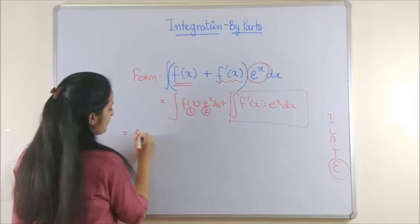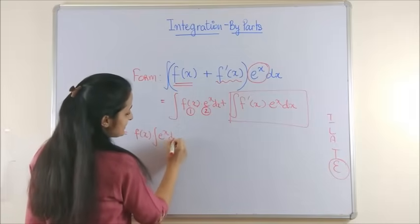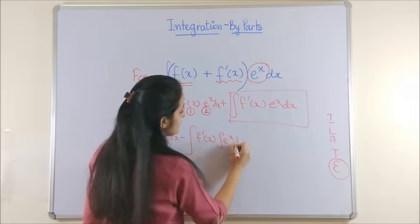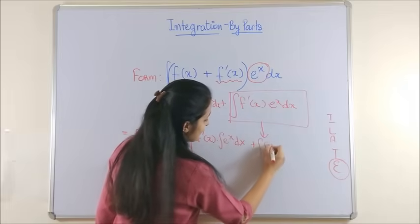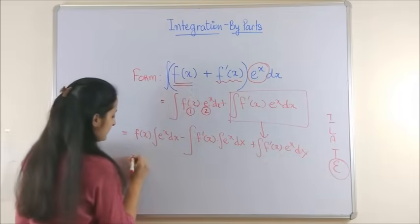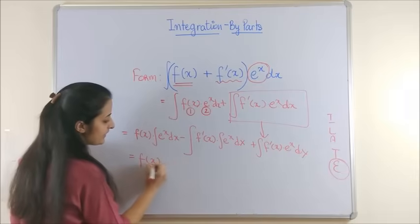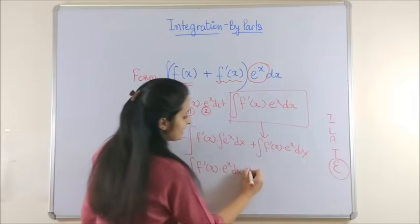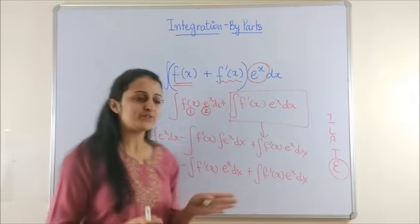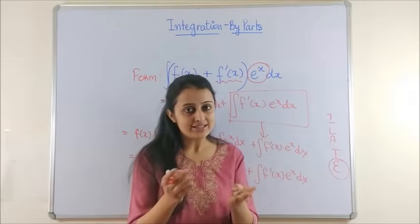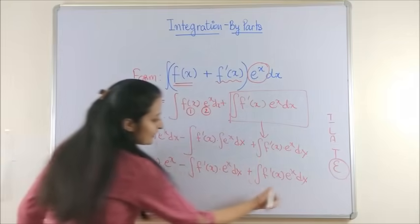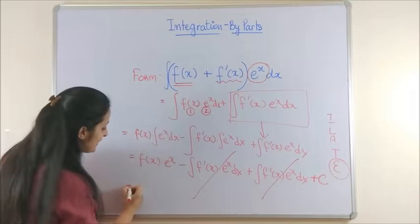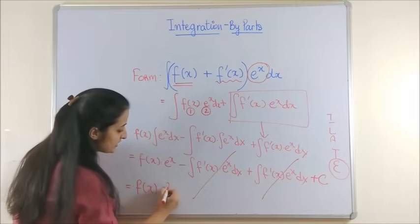We apply by parts, so we say this is f(x) as it is, into the integral of e^x dx, minus the derivative of f(x) into the integral of e^x dx, and the second separated term is copied as it is. The first part gives us f(x)·e^x, and this gives us the integral of f'(x)·e^x dx, which is copied as it is. You can clearly see these two terms cancelling, and what we are left with is simply f(x)·e^x plus C.